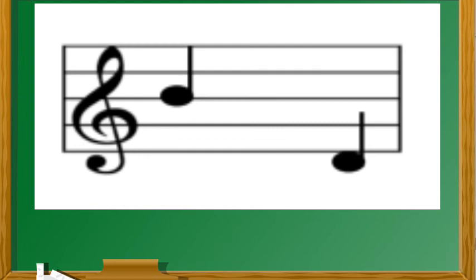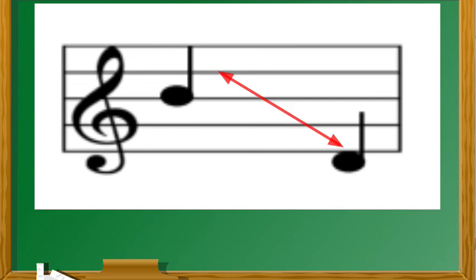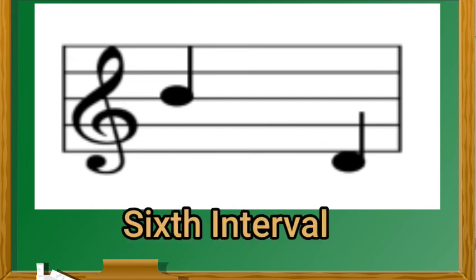Pangalawang bilang, simulan natin sa unang note. Kung titignan natin, ito ay pababa. Bilangin natin ang unang note. Ito ay nasa bahagi ng limbguhit. Isa, dalawa, tatlo, apat, lima, anim. Ang tamang sagot sa pangalawang bilang ay sixth interval.